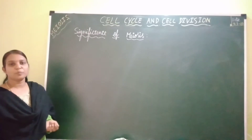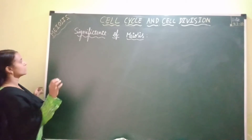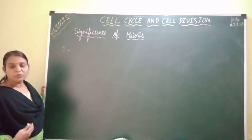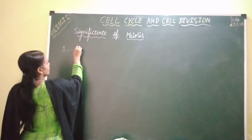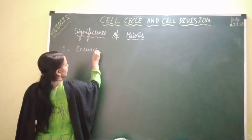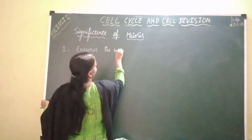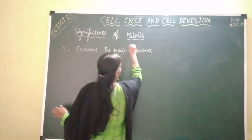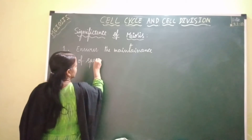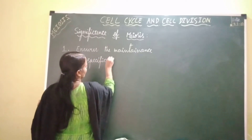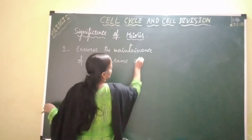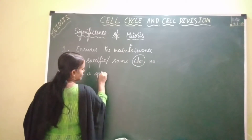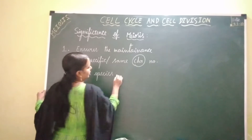Let's start with the significance of meiosis. The first significance of meiosis is that meiosis ensures the maintenance of the specific chromosomal number of a species for several generations. I'll explain this by taking an example.